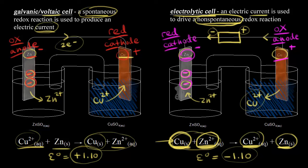You can see the difference between a voltaic cell and an electrolytic cell. A voltaic cell creates a current because of a spontaneous redox reaction. For an electrolytic cell, we have a non-spontaneous redox reaction, so to get it to occur we need a current — an external voltage source.